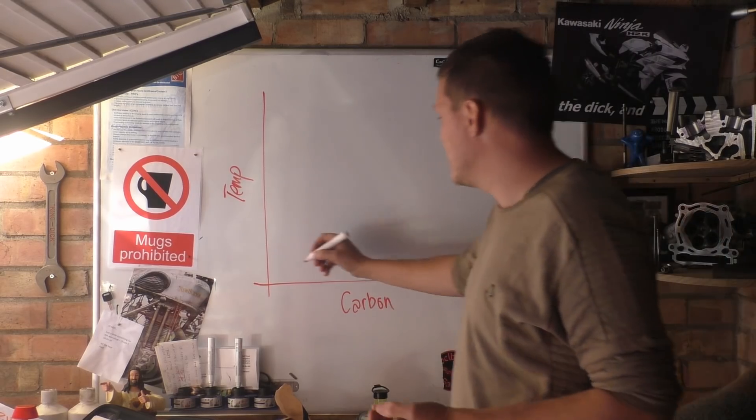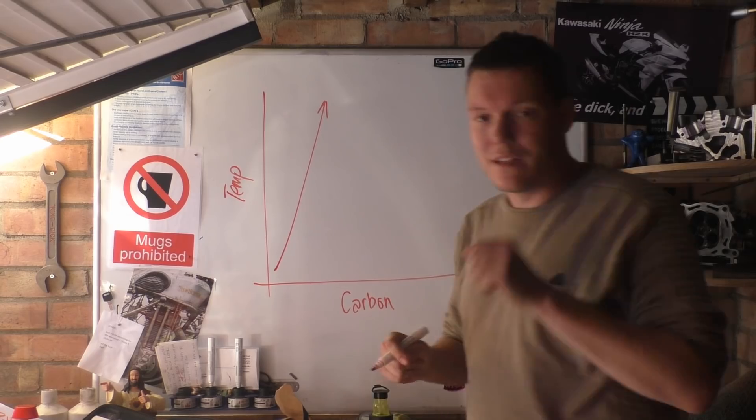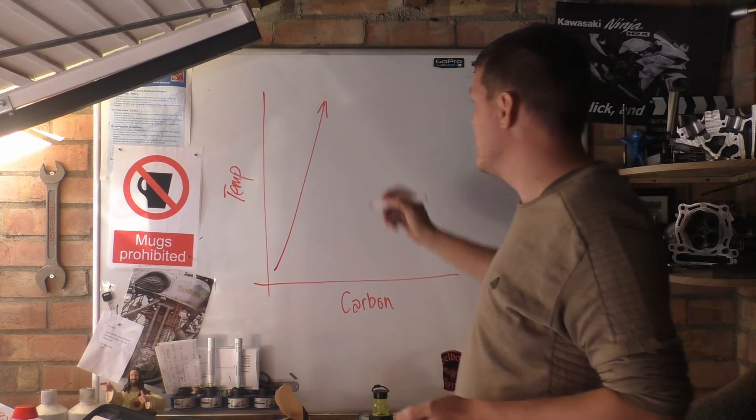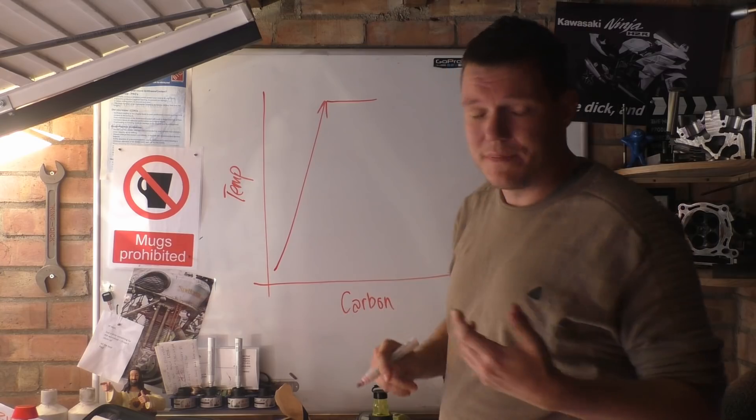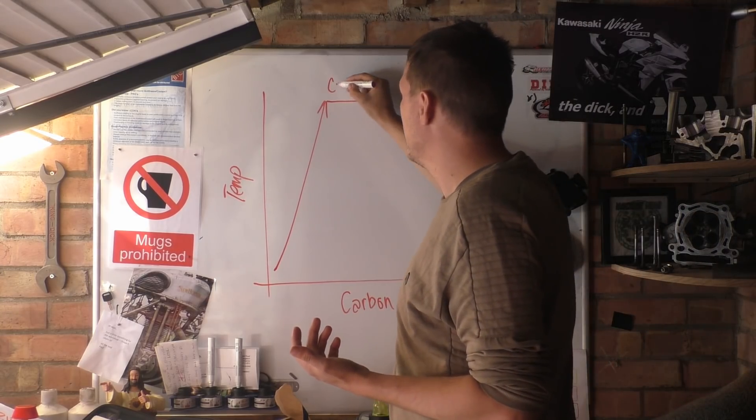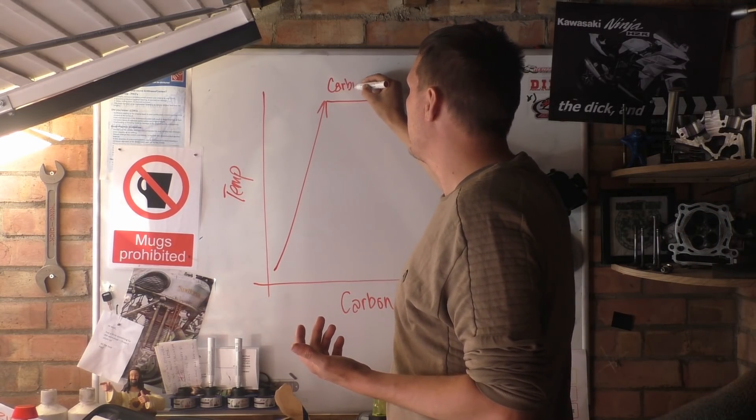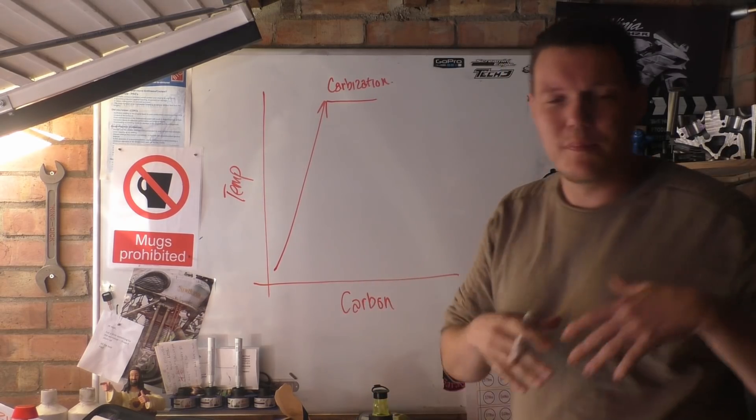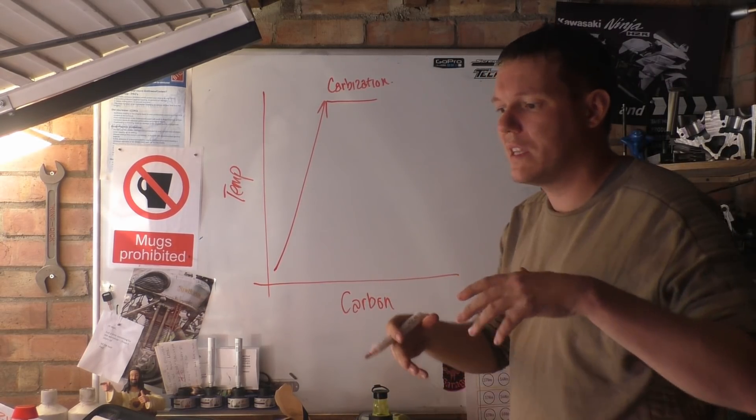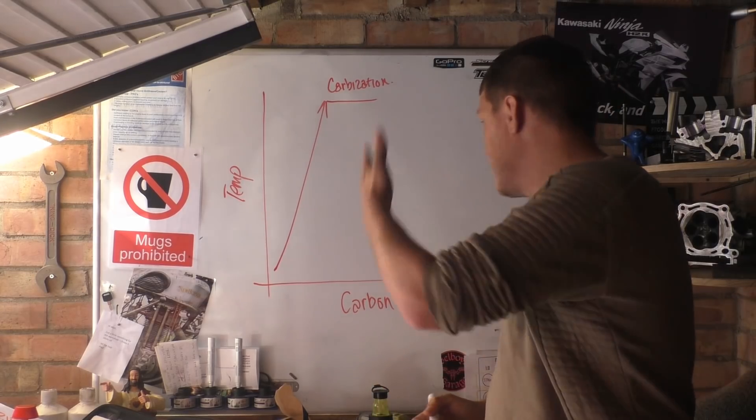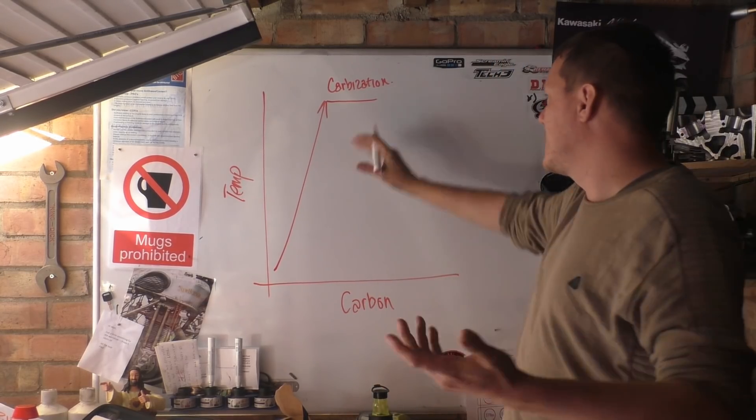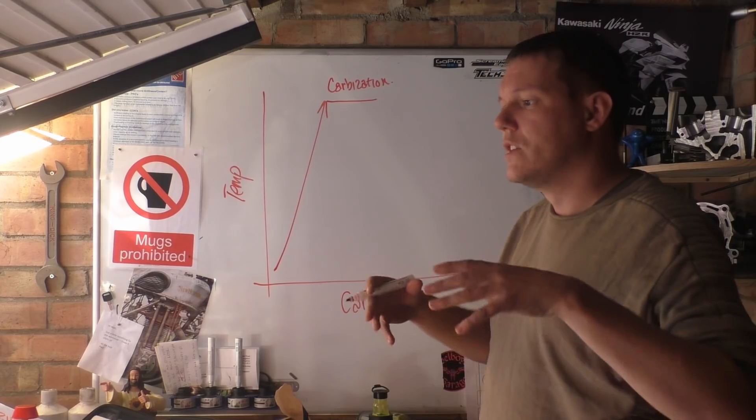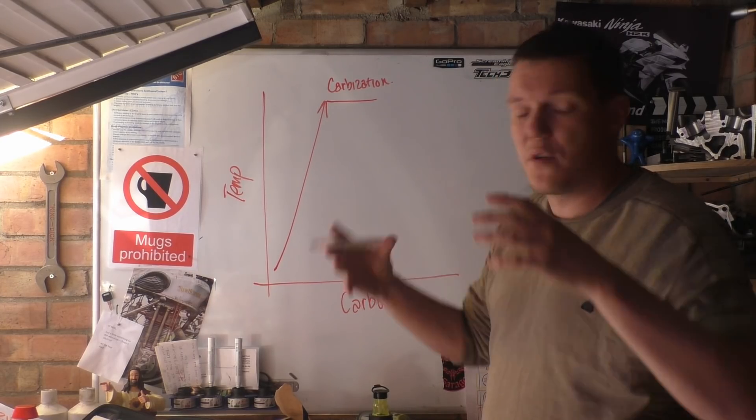Basically what you do is you raise the temperature of your steel, you kind of hold it there so it saturates. This is carburization or nitriding depending what atmosphere or surface treatment you give it before you do this. Basically you hold that temperature for a while to make sure that you have through hardening.